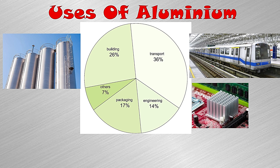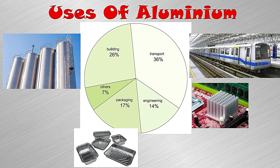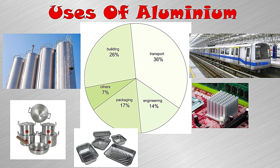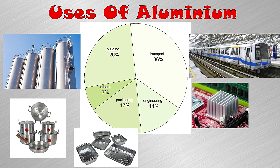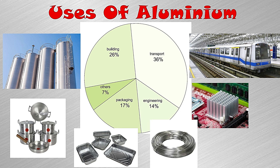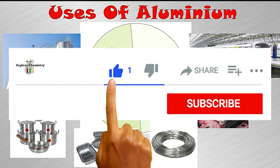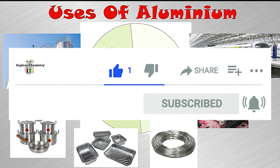14 percent of aluminium is used in engineering for the construction of different substances, 17 percent is used in packaging, and 7 percent is used in other applications such as cooking utensils and electric wires, because aluminium is a very useful metal. Hopefully you understood each and every point of this electrolysis process and how aluminium is extracted in industry. If you understood everything, please like the video and subscribe to the channel for more interesting videos. Thank you, Allah Hafiz.